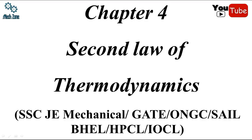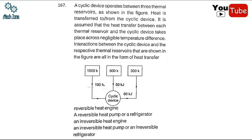We would like to request you to follow each and every question very sincerely. If you have any doubt in any of the questions, do respond to us on our Facebook page or YouTube channel. The first problem: a cyclic device operates between three thermal reservoirs as given in the figure. This cyclic device is absorbing 100 kilojoule of heat from 1000 Kelvin, 50 kilojoule from 500 Kelvin, and rejecting 60 kilojoule to 300 Kelvin.